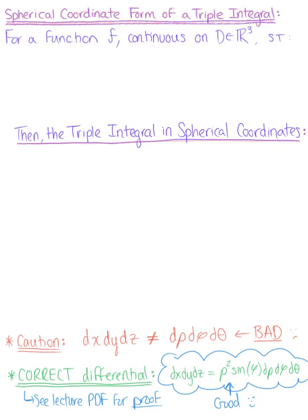So let's go ahead now and take a look at the spherical coordinate form of a triple integral. So for a function f continuous on a solid region d in R3, we can define this solid region d by the set of all ordered triplets